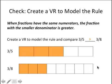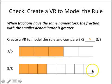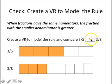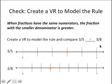Here's our check. Here's a visual representation for three-fifths and here's one for three-eighths. We've got five equal-size parts with three shaded, and eight equal-size parts with three shaded. Same numerator — three shaded parts in both cases — but our fifths are greater than our eighths. Bigger parts for a smaller denominator. So when fractions have the same numerator, the fraction with the smaller denominator is greater, and three-fifths is greater than three-eighths. If you made number lines rather than bar models, this is what your work might look like.